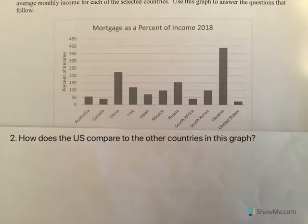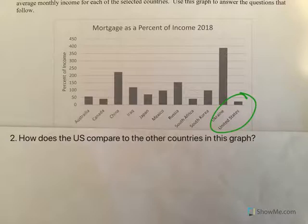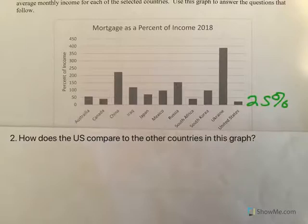Let's look at a bar graph here — mortgage as a percent of income. Looking at the U.S., it's roughly halfway between 0 and 50, so I'd say that's roughly 25% of income. So about 25% of income in the U.S. goes to our mortgage.